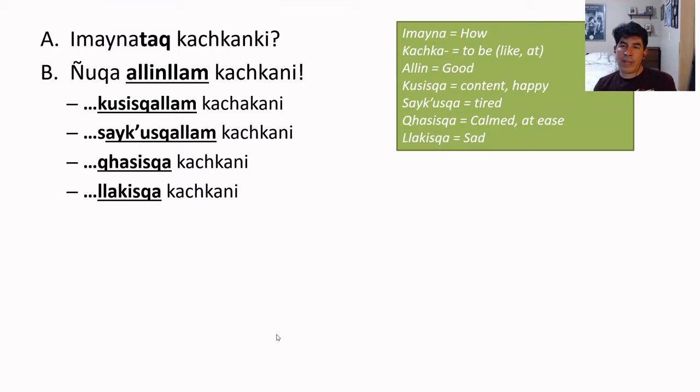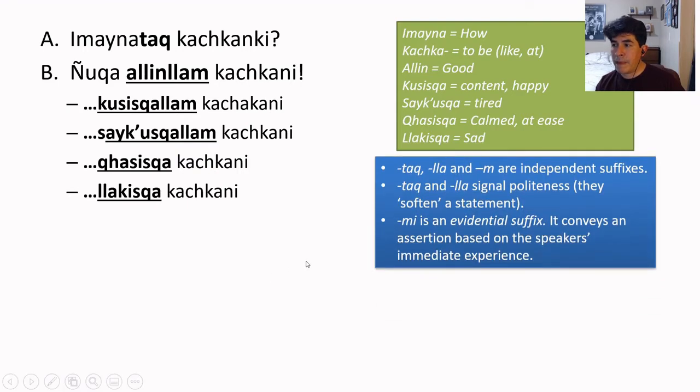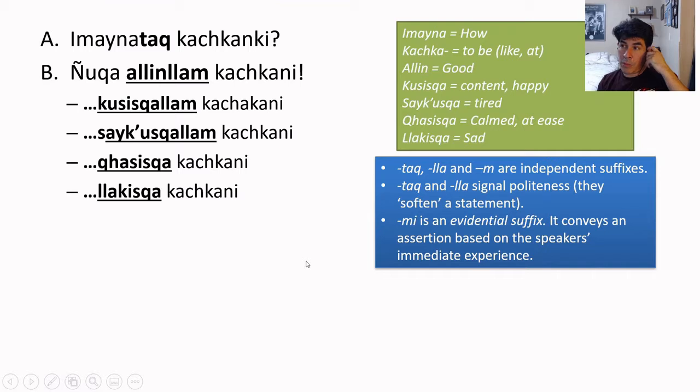So here is a list of the words that we've been using in this example of small talk. What you can see is that there are two suffixes that are being used in this exchange. Well, actually, there are three.